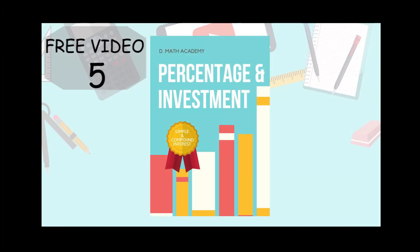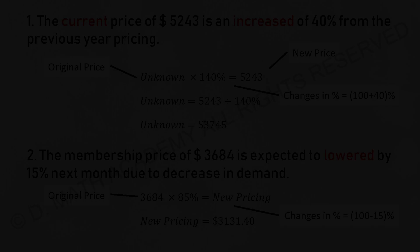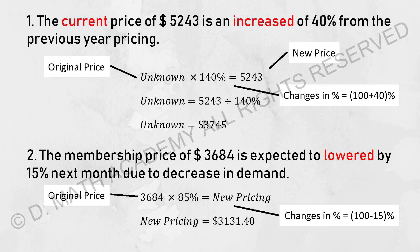For the next topic: percentage of investment. We usually involve simple and compound interest calculation. For the first question, we have a couple of keywords. We have the current pricing, we have an increase of 40% from the previous year. From this, we immediately know that they are looking for the previous year's amount.